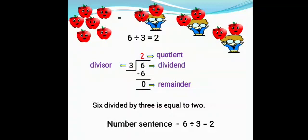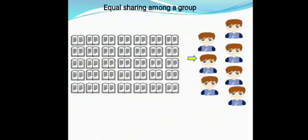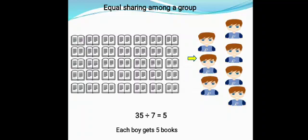We can read it as 6 divided by 3 is equal to 2, and the number sentence will be 6 ÷ 3 = 2. Let's take one more example to explain division as equal sharing among a group. Suppose we have to divide 35 books equally to 7 children. Here we will divide 35 by 7, so when we share equally, each child gets 5 books.